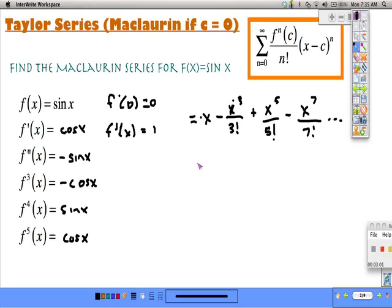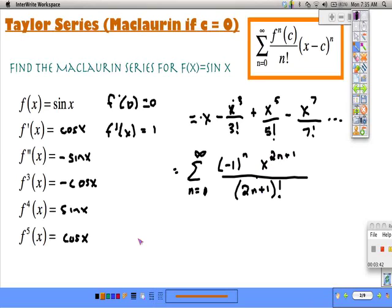We can write this in sigma notation, n equals 0 to infinity of negative 1 to the n, x to the 2n plus 1 over 2n plus 1 factorial. We're going to find the interval of convergence for this, so we're now going to use our ratio test.